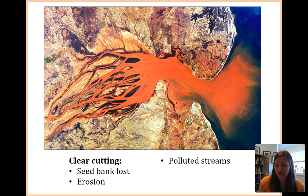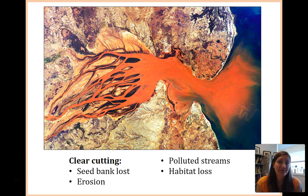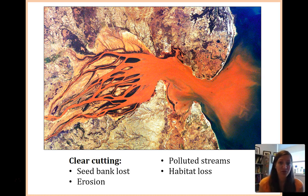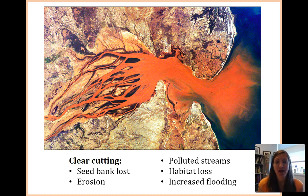Talking about polluted streams and habitat loss — not just habitat loss for organisms living in those streams, but habitat loss for the organisms living in that forest. You will no longer have deer or other mammals that might be hiding. You're going to lose a lot of your bird species. A lot of things need some sort of protection and habitat.